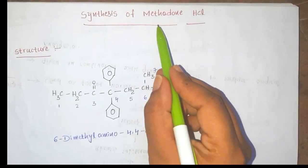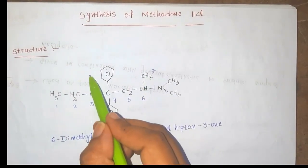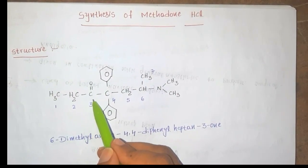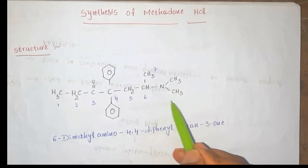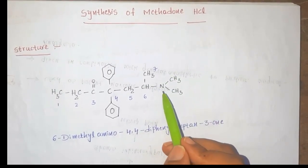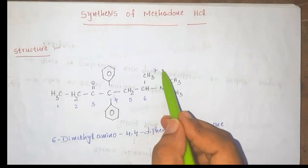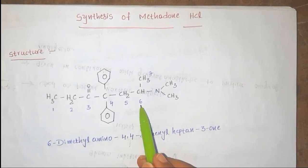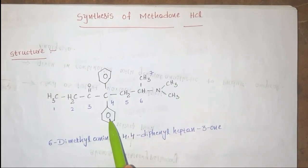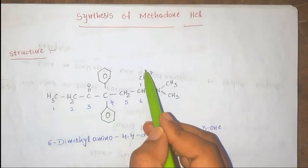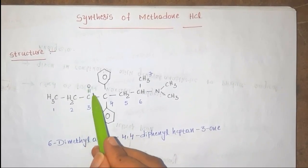Methadone contains diphenyl groups and a heptanone moiety, with an 'one' group present at the third position, so it is called as diphenyl heptanones. It is directly attached with a dimethylamino group. The numbering is 1, 2, 3, 4, 5, 6, and 7. The nomenclature is 6-dimethylamino-4,4-diphenyl; it contains seven carbons so it is called heptane, and at the third position it contains an 'one' group, so it is called heptane-3-one.